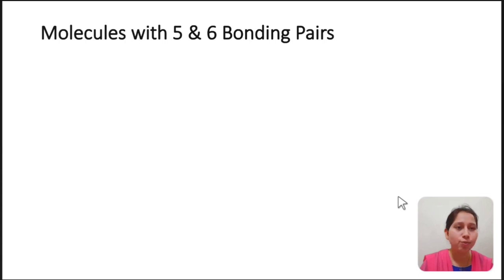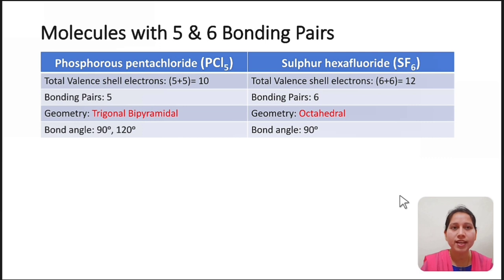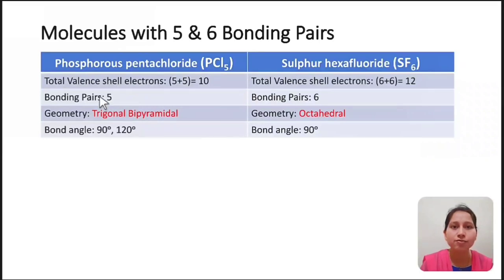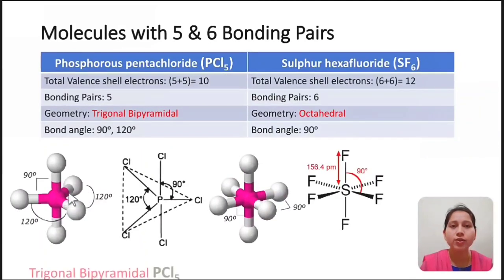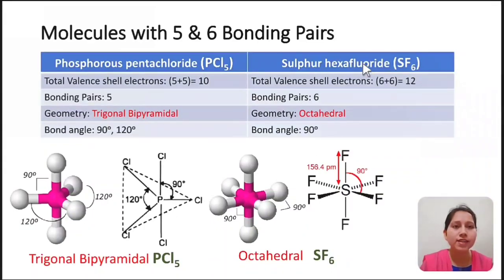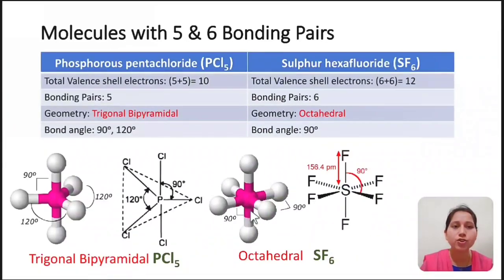Next: molecules with five and six bonding pairs. You can take these as an assignment. Phosphorus pentachloride (PCl₅) is an example of a molecule with five bonding pairs: total valence shell electrons = 10, giving five electron pairs, all bonding, so geometry is trigonal bipyramidal with bond angle 90°. Sulfur hexafluoride (SF₆) is an example with six bonding pairs: total electrons = 12, giving six bonding pairs, so geometry is octahedral with bond angle 90°.